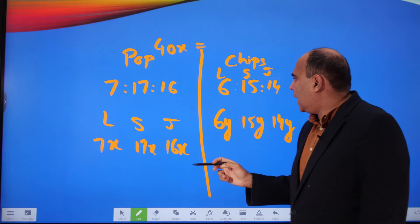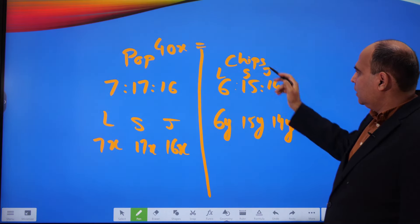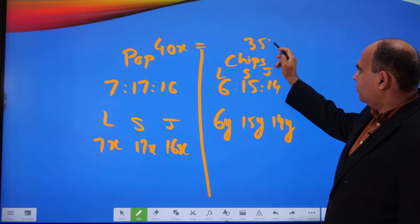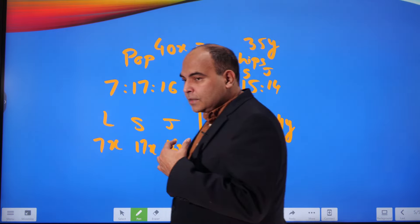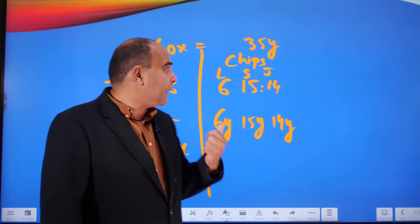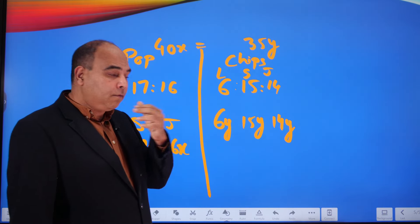Total number of popcorn packets according to this is 40x, the same as total number of chips packets which is 35y. So 40x equals 35y.